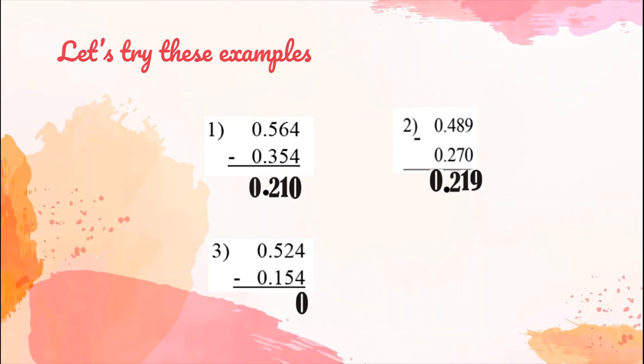Can we subtract 2 minus 5? Of course not because 2 is less than 5. So we cannot subtract 2 by 5 but instead we are going to borrow to the number on its left. We are going to borrow from 5. 5 will become 4 and 2 will become 12. So we can now subtract 12 by 5. 12 minus 5, we have 7. 4 minus 1, we have 3.